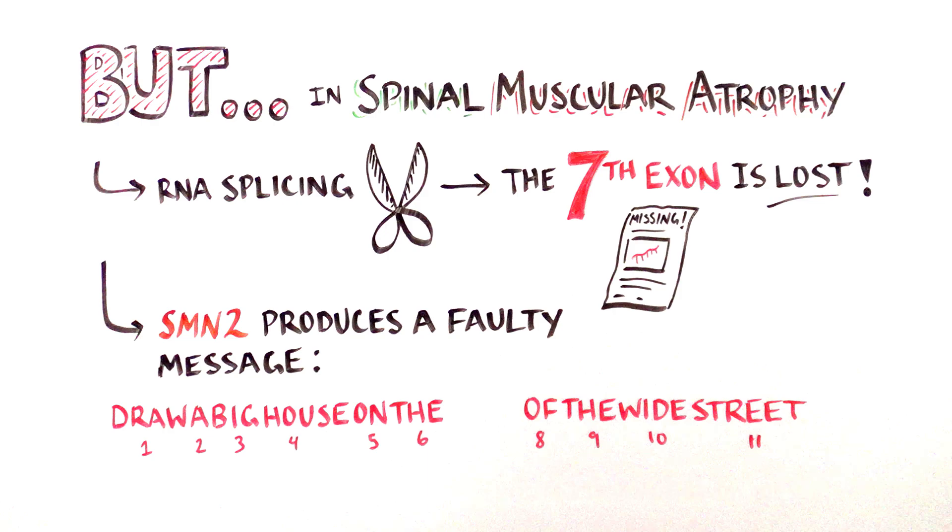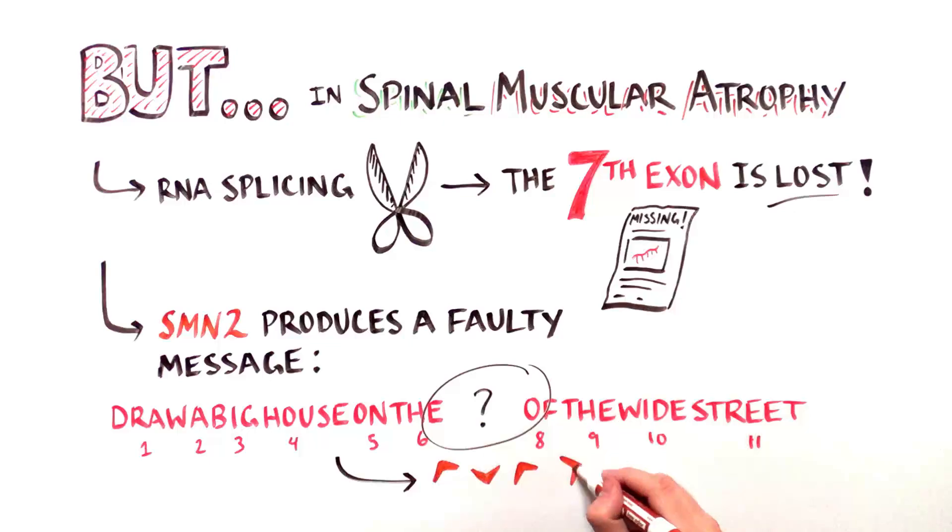Just like removing word number 7 in the sentence leads to a statement that makes no sense, removing exon 7 in the RNA results in a defective protein.